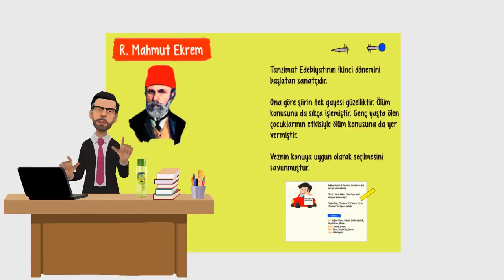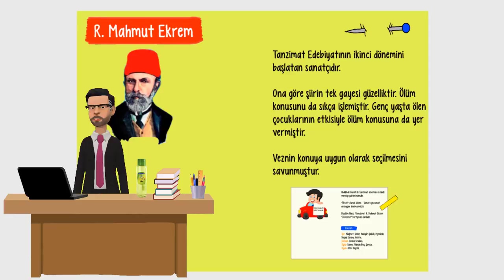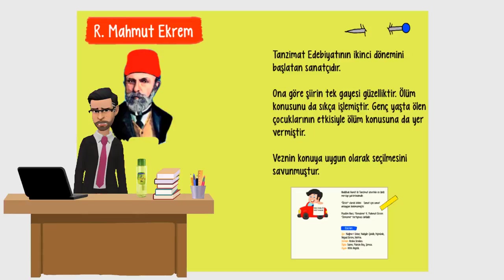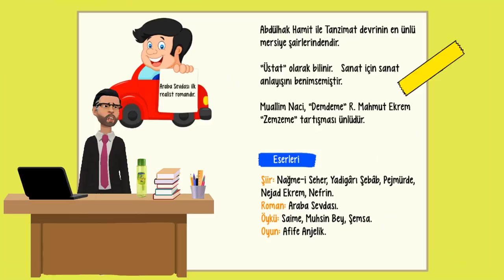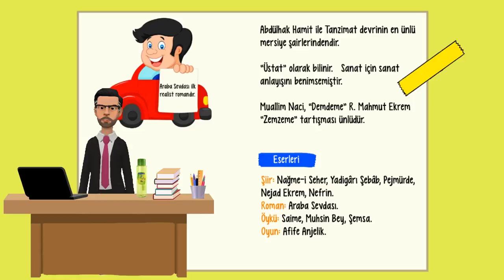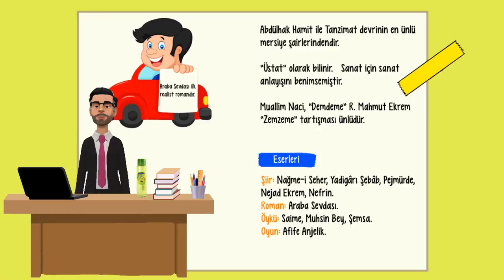Şimdi sizlerle ikinci dönem Tanzimat sanatçılarını tanıyalım. Recaizade Mahmut Ekrem, Tanzimat edebiyatının ikinci dönemini başlatan sanatçıdır. Ona göre şiirin tek gayesi güzelliktir. Ölüm konusunu sıkça işlemiştir; genç yaşta ölen çocuklarının etkisiyle bu konuya yer vermiştir. Veznin konuya uygun olarak seçilmesini savunmuştur. Abdülhak Hamit ile Tanzimat devrinin en ünlü mersiye şairlerindendir. Üstat olarak bilinir. Sanat için sanat anlayışını benimsemiştir. Muallim Naci - Demdeme ile Recaizade Mahmut Ekrem - Zemzeme tartışması ünlüdür.